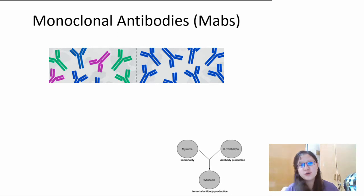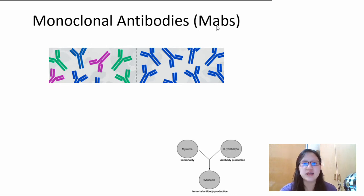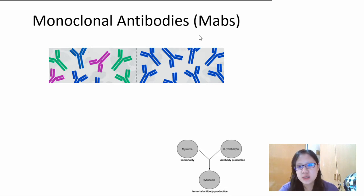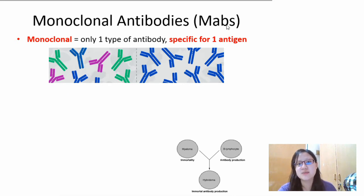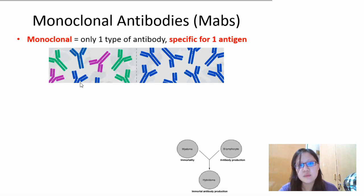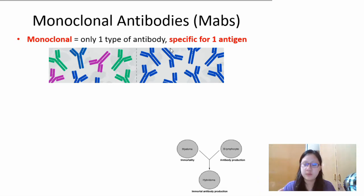Let's move on to the second part of this video on monoclonal antibodies, or MABs. These monoclonal antibodies are not what we are producing in our body. When we produce antibodies in our body, there are many, many antibodies produced at the same time, and each antibody is specific for one antigen — it's a mixture of many different antibodies. Monoclonal means only one type of antibody is produced in a huge bunch, and it's specific for one antigen only.